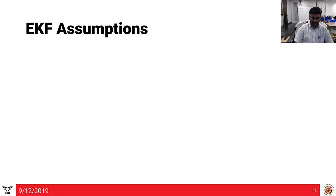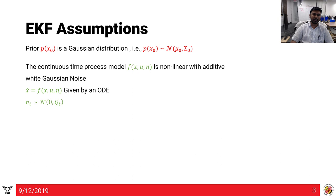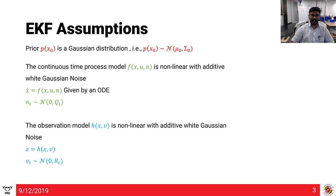What are the EKF assumptions? They're very similar to Kalman filter assumptions. The prior again is a Gaussian distribution. The continuous time process model F is a non-linear function with additive white Gaussian noise, given by an ODE. The main difference is that the function is non-linear and it's given by an ODE instead of a linear function. Everything else remains the same. The observation model H is also non-linear with additive white Gaussian noise.